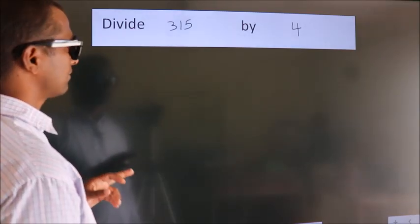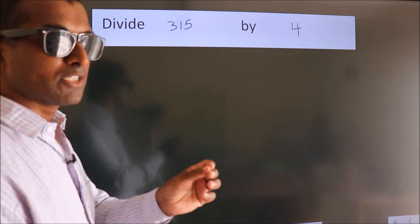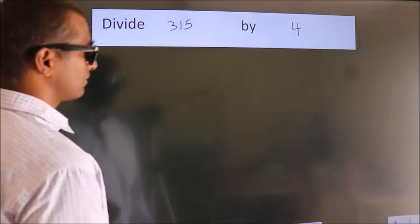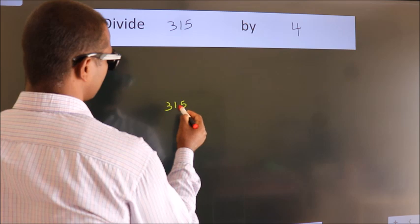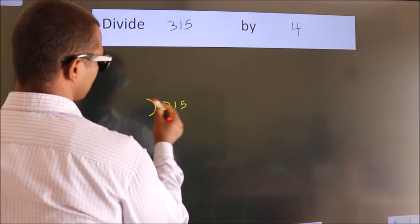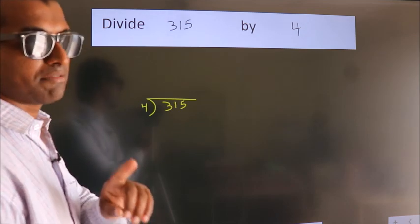Divide 315 by 4. To do this division, we should frame it in this way: 315 here, 4 here. This is your step 1.